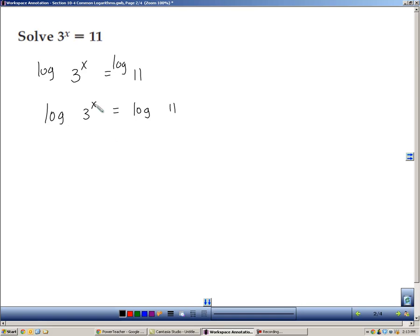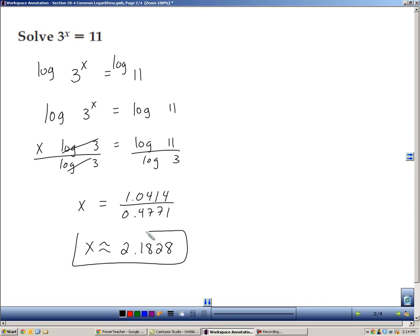According to the power property, I can take that x and move it in front of the log of 3 and multiply it. And now if I want to isolate the x, I'm just going to divide both sides by the log of 3 because that's nothing more than a number. So x is going to equal log 11 over log 3. So you just plug those into calculator, you get decimal approximations, and then you go ahead and divide that in your calculator. And you get 2.1828 is approximately what x equals.